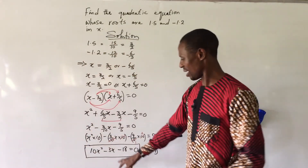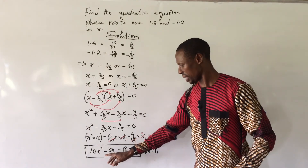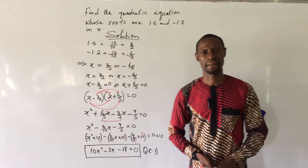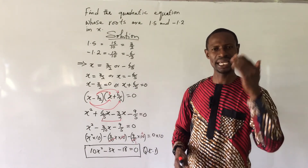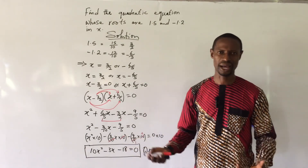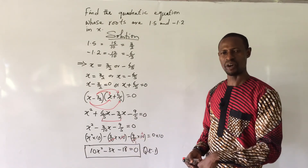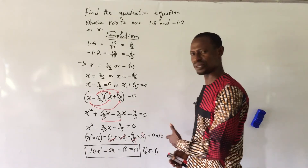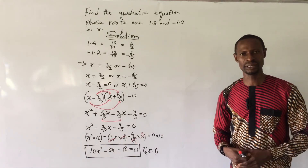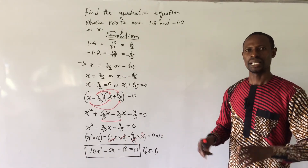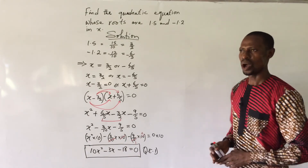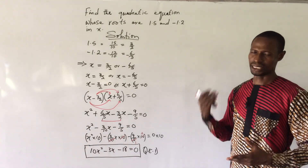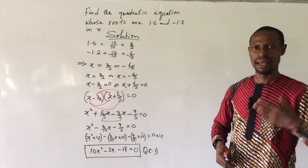So our final answer is 10x squared minus 3x minus 18 equals zero. If you are gaining value from our teachings, drop a comment and give us a thumbs up. If you are new to this channel, kindly subscribe so you'll be among the first to receive our new videos. Once again, my name is Jake's Animal — thanks for being there.